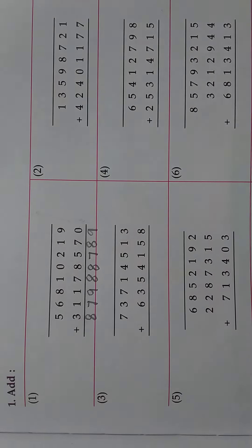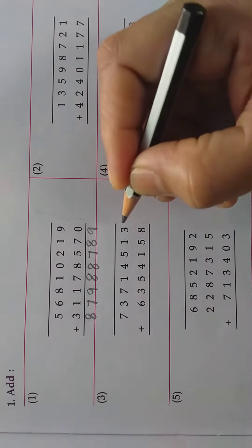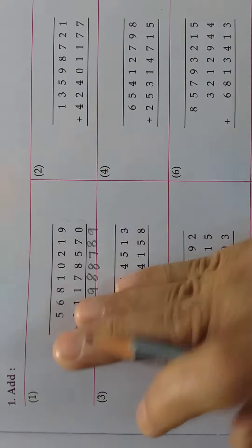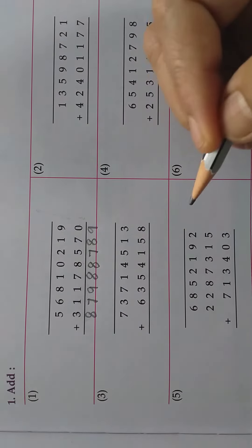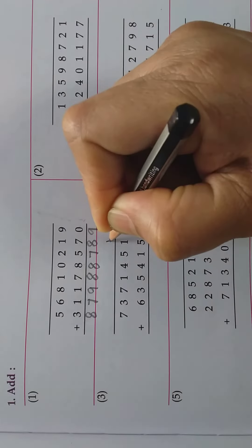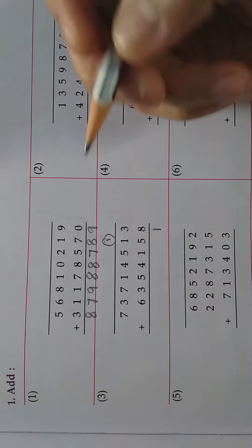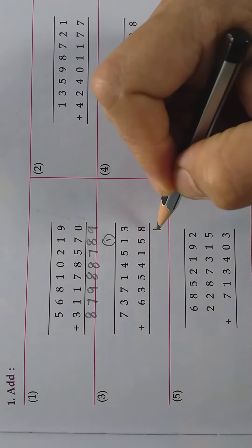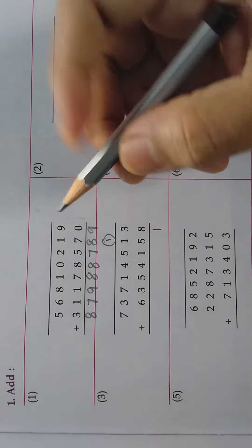Now I will write the third sum. See here, always start from right. 3 plus 8, how much? 11. So write 1 here, 1 as carry.